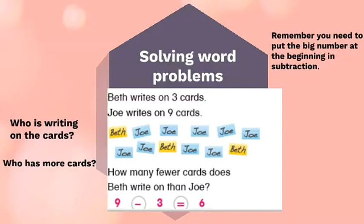What do we do? We put the big number at the beginning, the number that is more, the number that is higher, which is number nine. Nine take away three equals six. We are taking away, subtracting. This is a word problem as well.